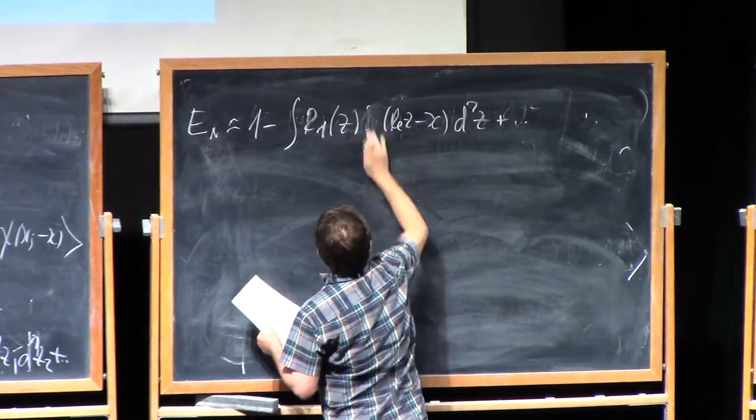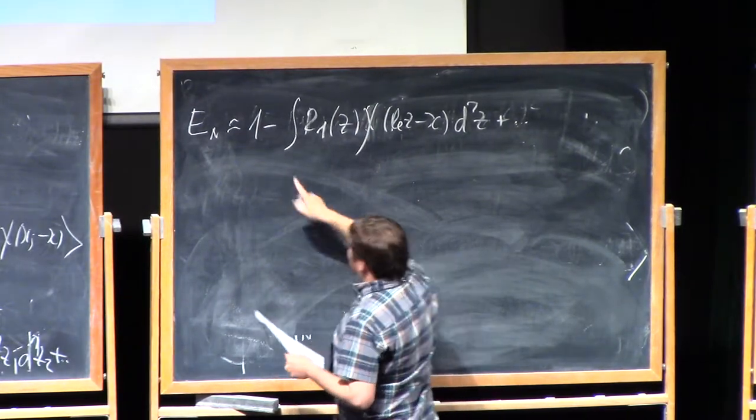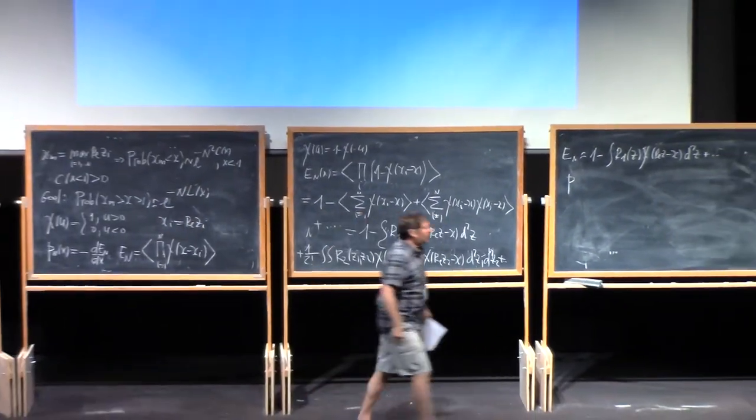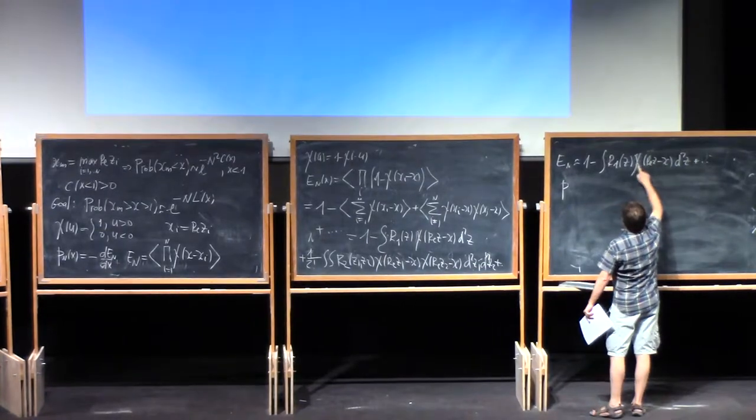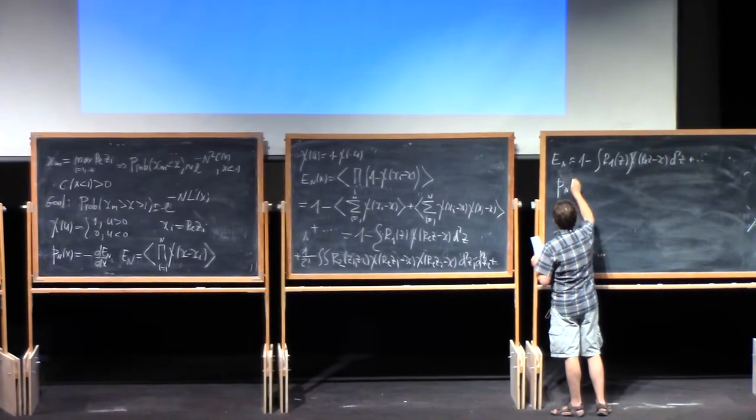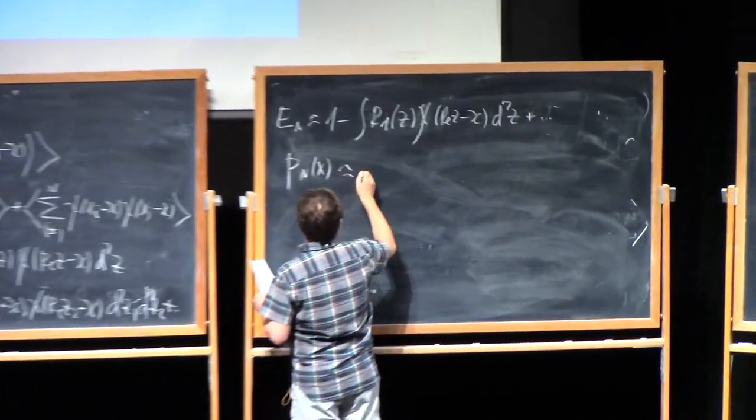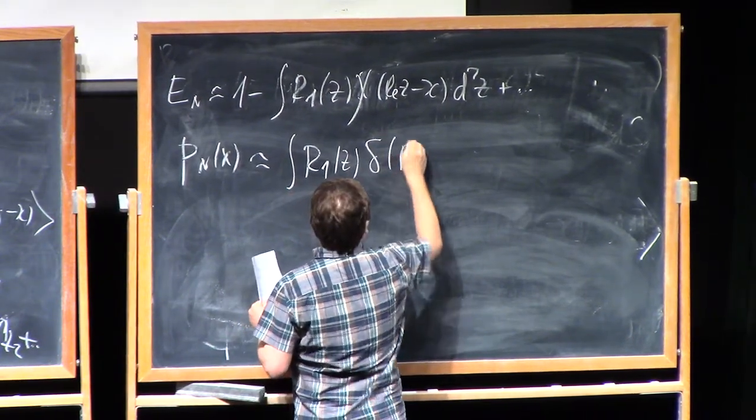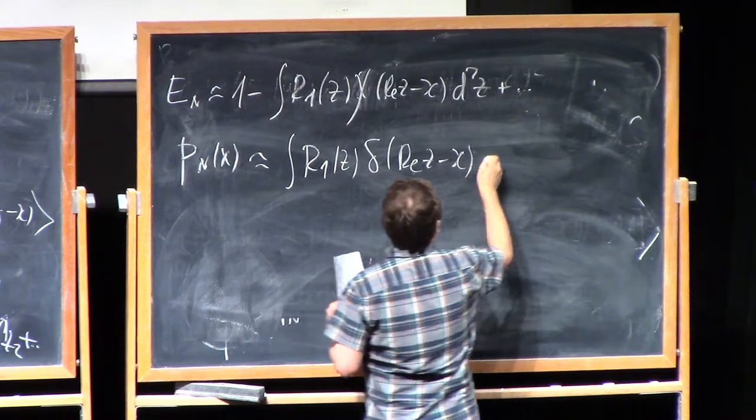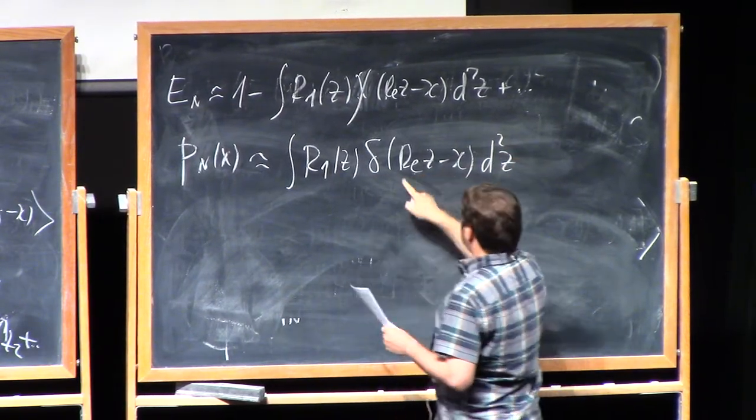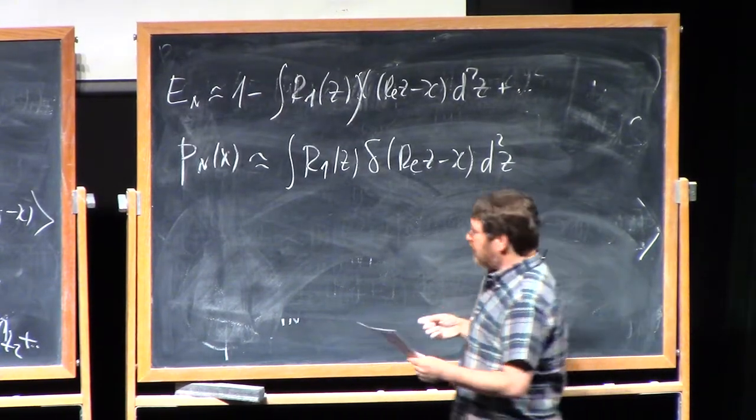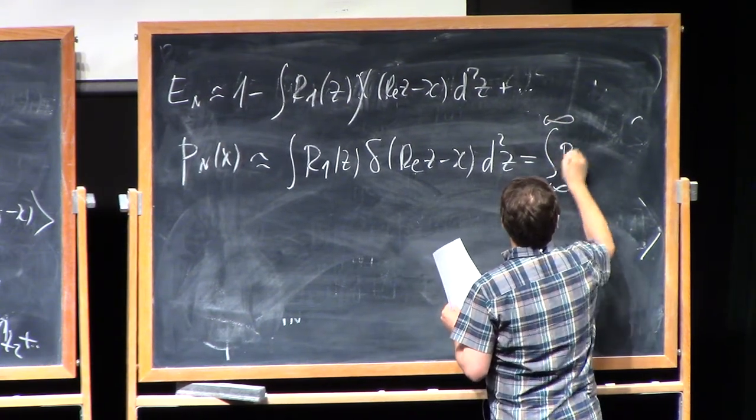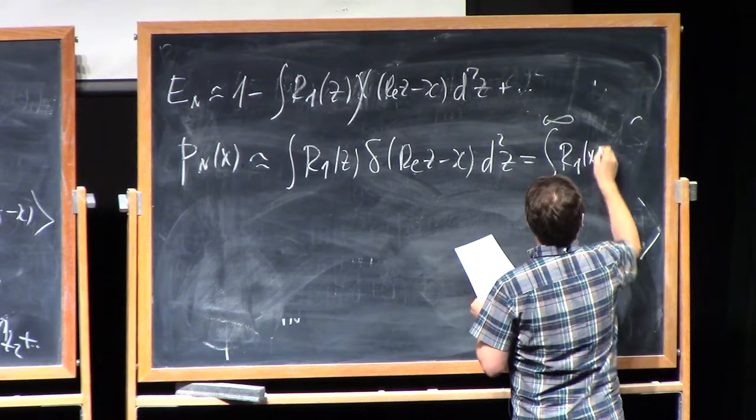And using this fact, we see that basically the probability of interest to us is simply given in terms of the object that we spent much time discussing, this mean density. But just one should investigate it with higher precision, which does not just give zero here, but just gives the order of magnitude. And this will give us precisely the required result. So this En is approximately one minus integral of r1 of z chi of real part of z minus x dz plus small terms. And then taking derivative. It's chi here. Sorry. It's chi here. But now I take derivative. Pn is obtained by taking derivative over x. So I get delta function rather than differentiating chi over x. I get delta function.